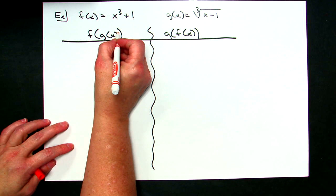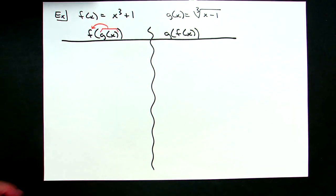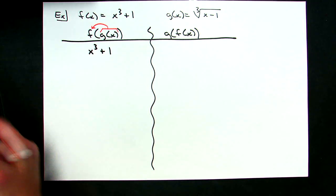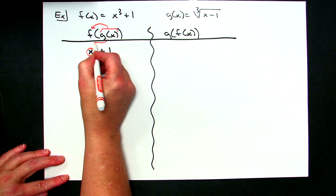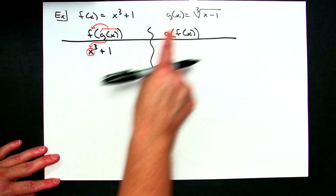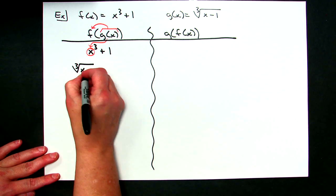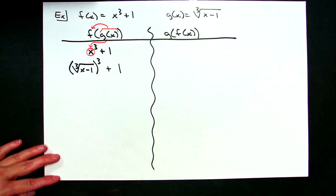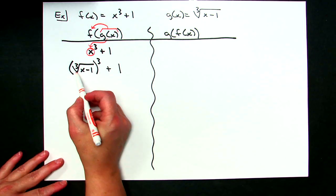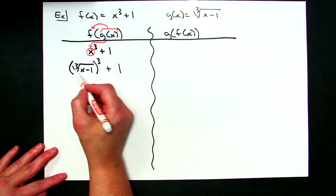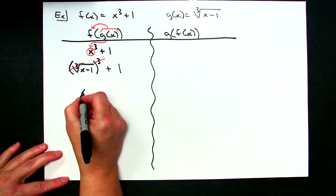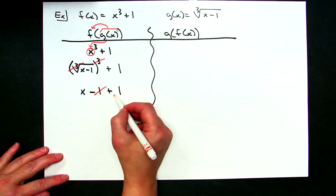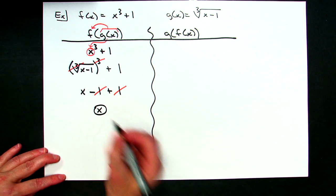For f of g of x, I write down the f function — x to the third plus one — and put the g function in where the x is. My g function is the cube root of x minus one, so that gets raised to the third power, then plus one to finish the equation. Taking the cube root and raising to the third power cancels, simplifying to x minus one plus one. The ones cancel, leaving just x.